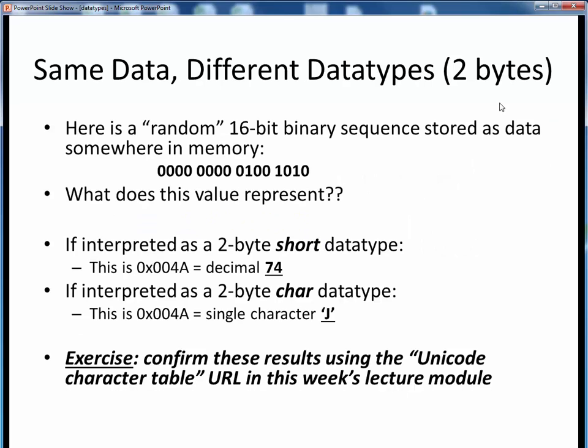Here's an interesting example. Let's say we've got the indicated 16-bit sequence of data stored somewhere in memory. What data does this bit sequence represent? Well, the answer is, the interpretation depends upon the data type being used to store it. If these 16 bits are stored using the 2-byte short data type, the answer is, this is decimal 74.